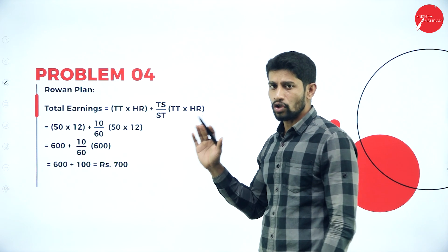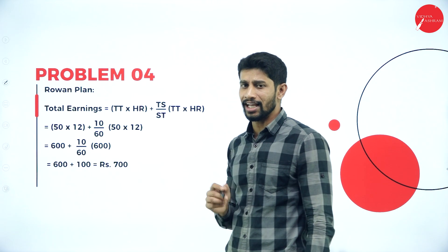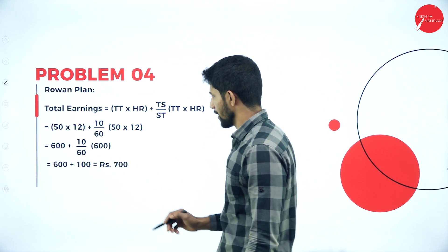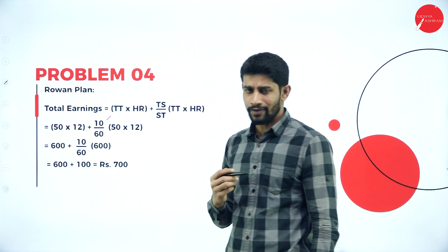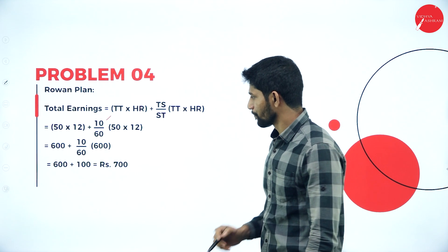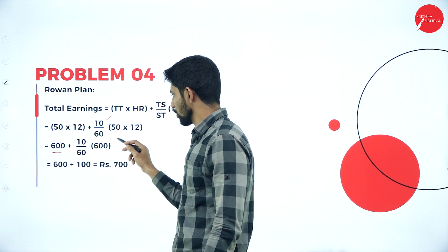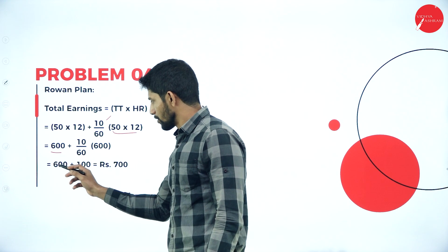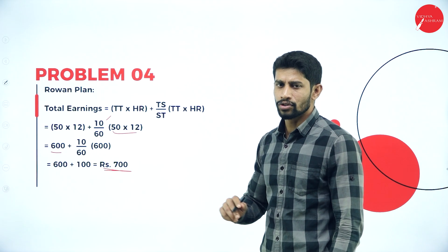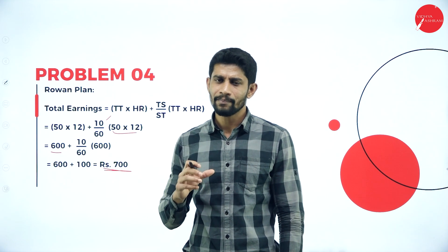Under Rowan plan: time taken × hourly rate + (time saved ÷ standard time) × time taken × hourly rate. So: 50 × 12 + (10 ÷ 60) × 50 × 12 = 600 + 100 = 700 rupees is the total earnings under Rowan plan. This is how you find the total earnings of an individual worker under Rowan plan and Halsey plan.